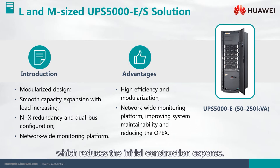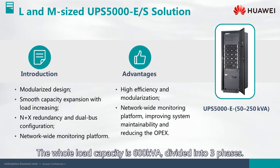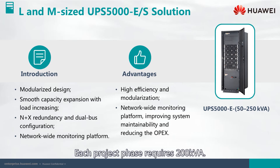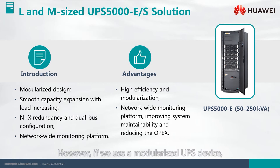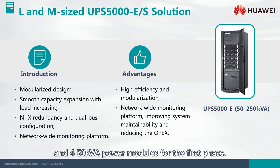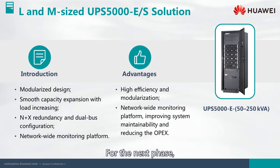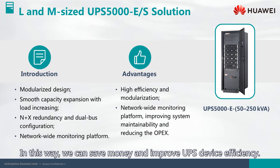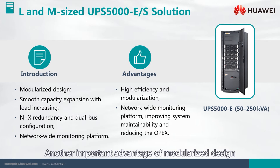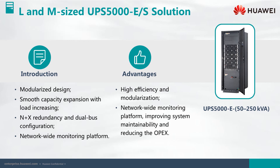The large and medium-sized UPS 5000-E or S solution uses a modularized design which reduces initial construction expense. For example, if the whole load capacity is 600 kVA divided into three phases, each phase requiring 200 kVA — with a traditional UPS device you must purchase a 600 kVA unit at the beginning, leading to low running efficiency. With a modularized UPS, you could purchase a 600 kVA rack and four 50 kVA power modules for the first phase, then simply add four more 50 kVA modules for the next phase, saving money and improving efficiency. Another important advantage is easy maintenance, as all power modules are independent and isolated from each other.